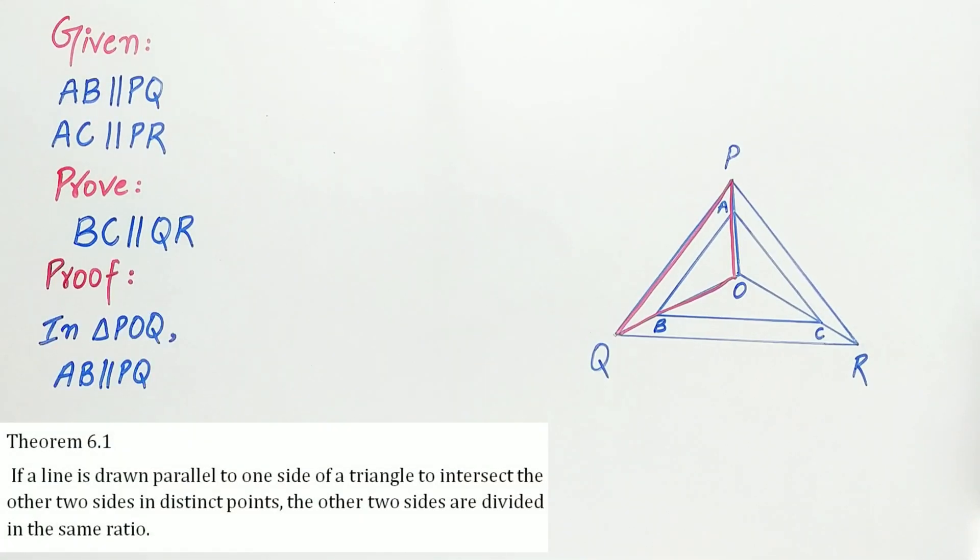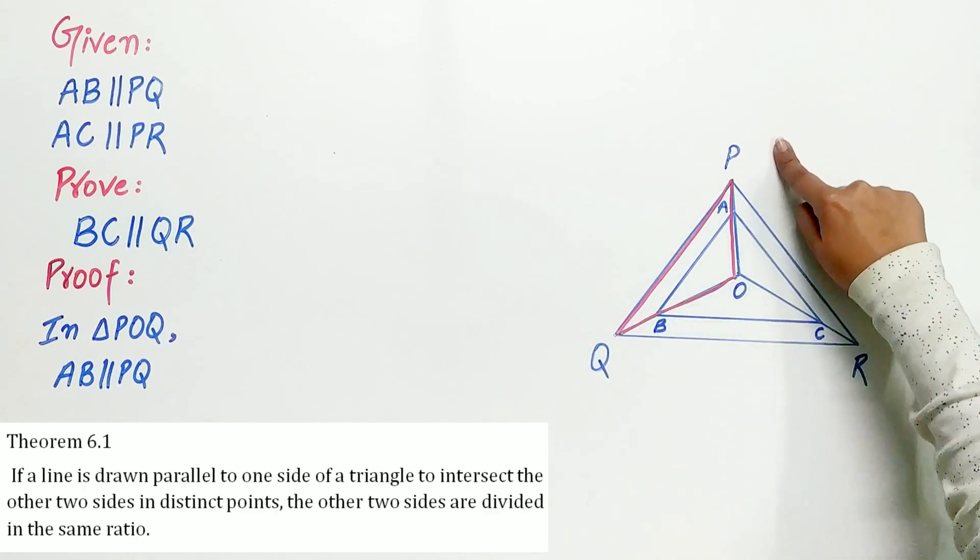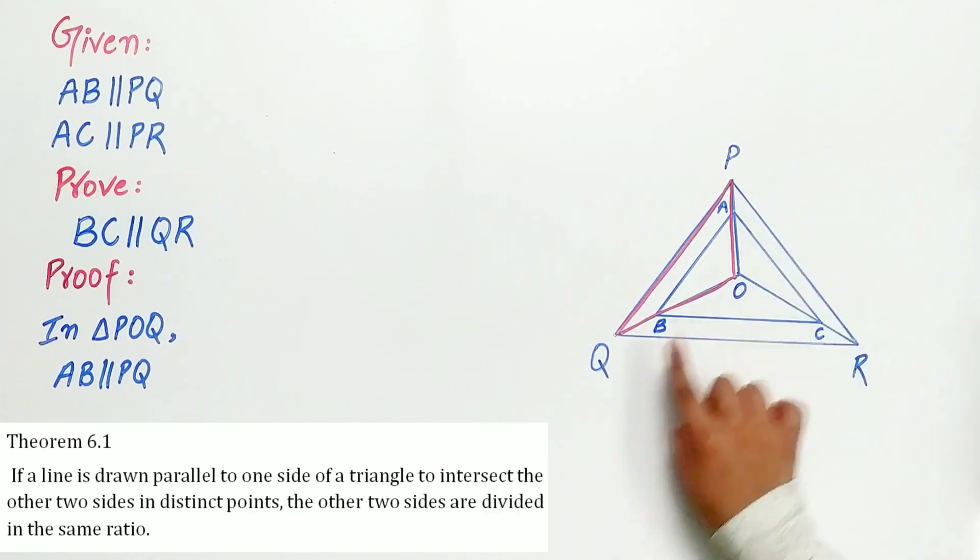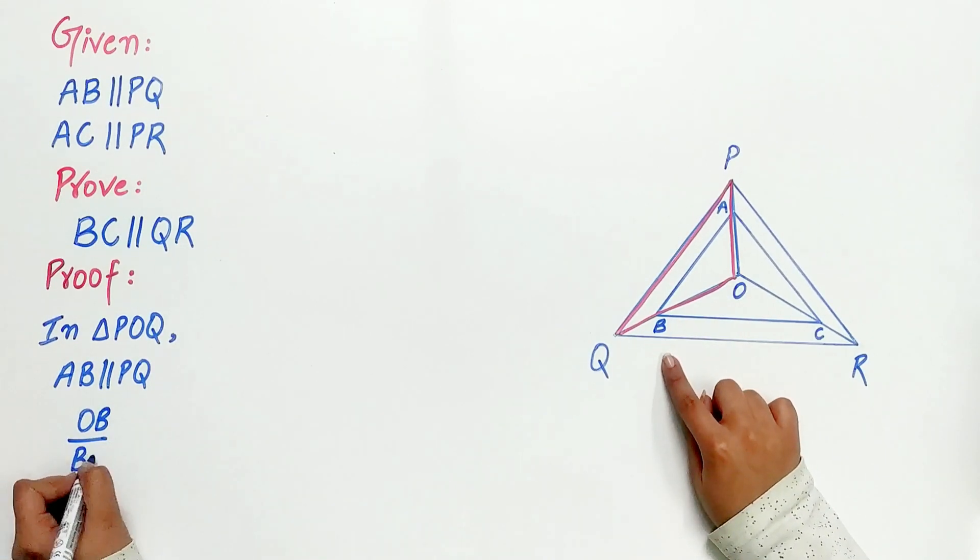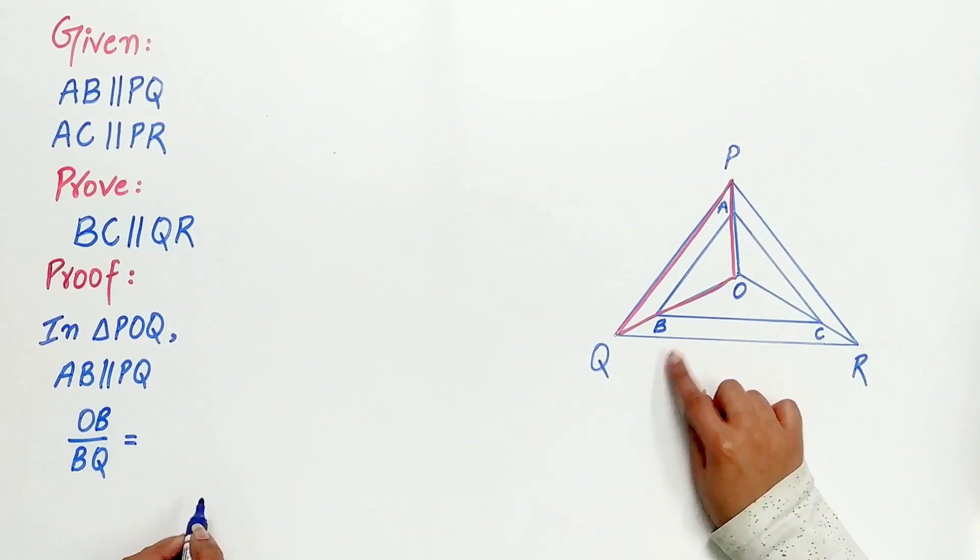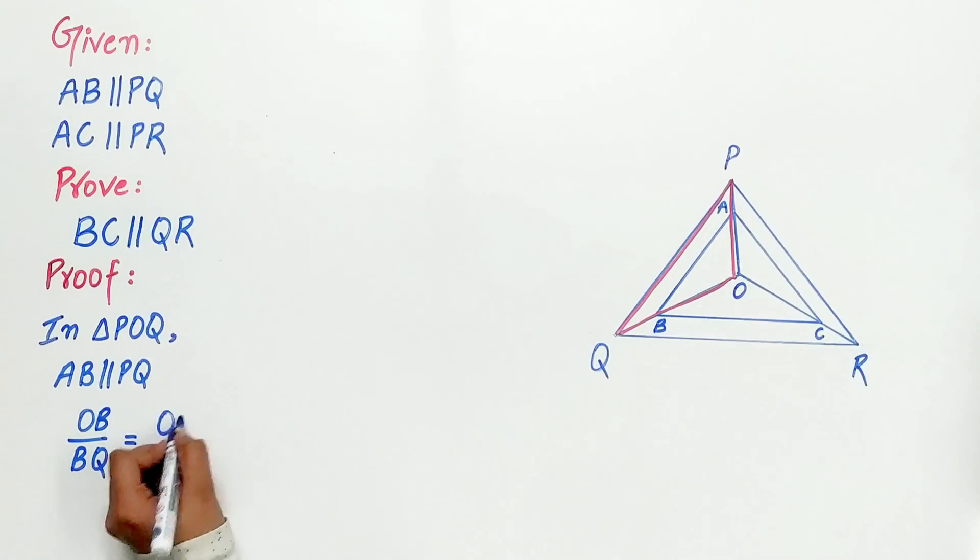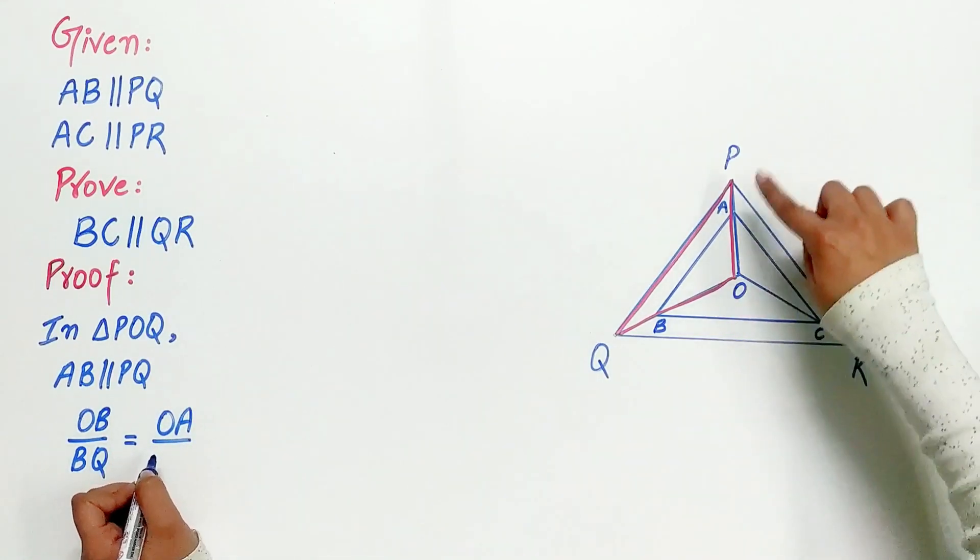Then by Theorem 6.1, if a line is parallel to one side of the triangle, then the other two sides are divided in the same ratio. Hence, OB/BQ equals OA/AP. Let's mark this as equation 1.